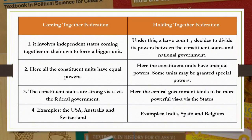Looking at the comparison table — Coming Together Federation vs Holding Together Federation: In a coming together federation, independent states come together on their own to form a bigger unit. In a holding together federation, a large country decides to divide its powers between the constituent states and the national government. In a coming together federation all constituent units have equal powers, whereas in a holding together federation the constituent units have unequal powers and some may be granted special powers.